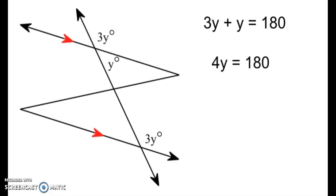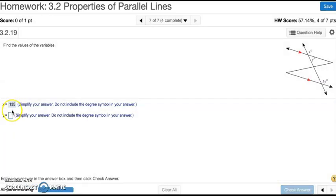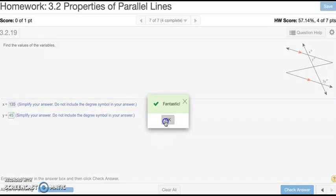So 3y plus y equals 180 degrees. Add those up, you get 4y equals 180. Divide by 4, you get y equals 45. Now we can use that to find x. Because remember, x equals 3y, so 3 times 45 will be 135. So let's type this in. So x is 135, and y is 45. And that's number 7.